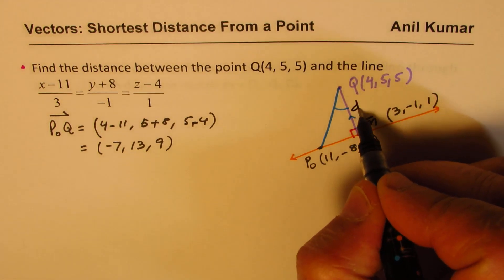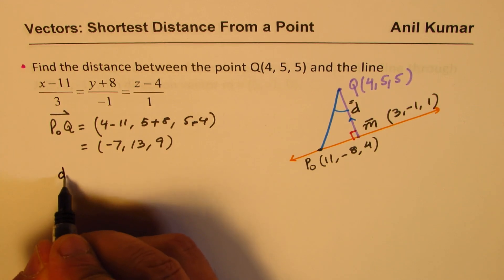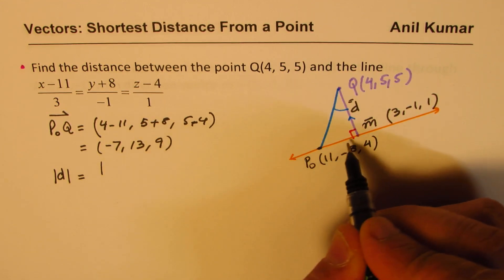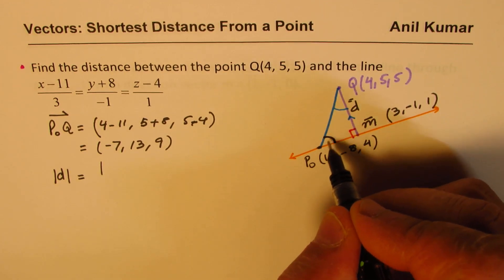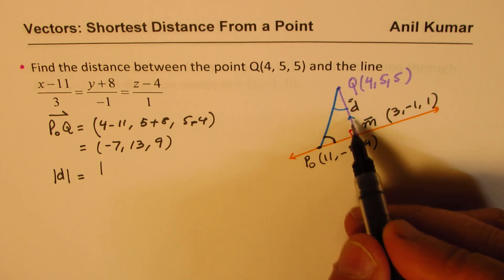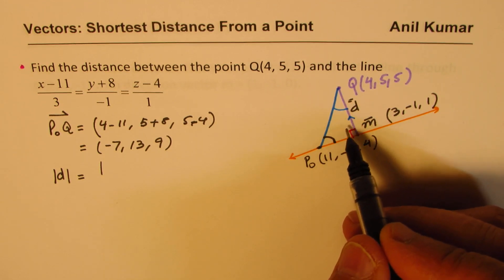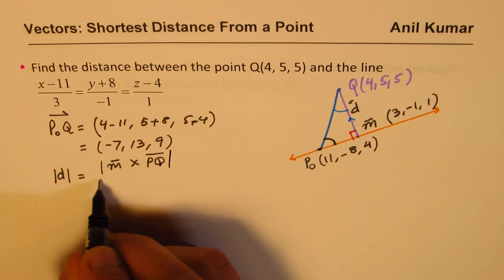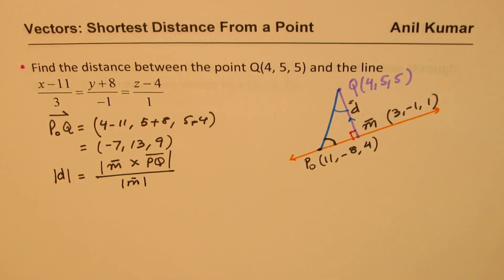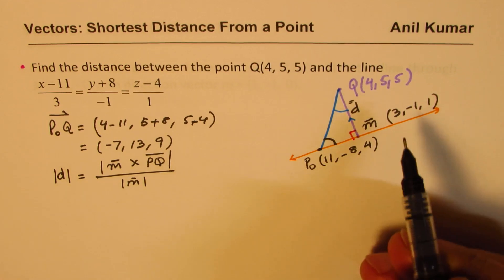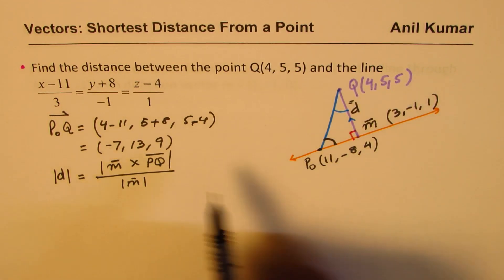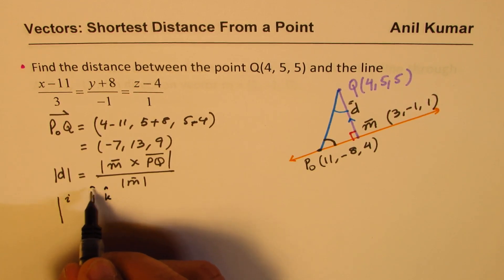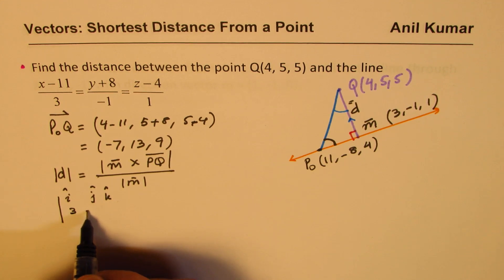We find the distance D directly using the cross product formula. The distance D equals the magnitude of M cross P0Q, divided by the magnitude of M. Here M is the direction vector of the line, and the cross product gives the perpendicular component via sin(θ). Now let's find the cross product between these two vectors.